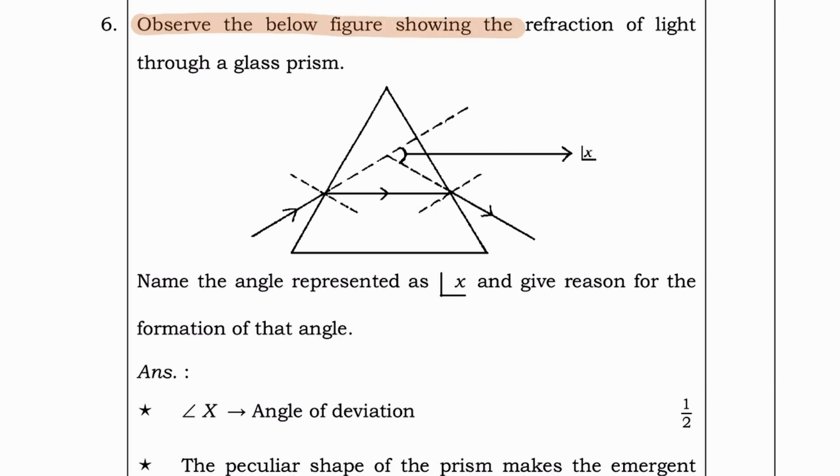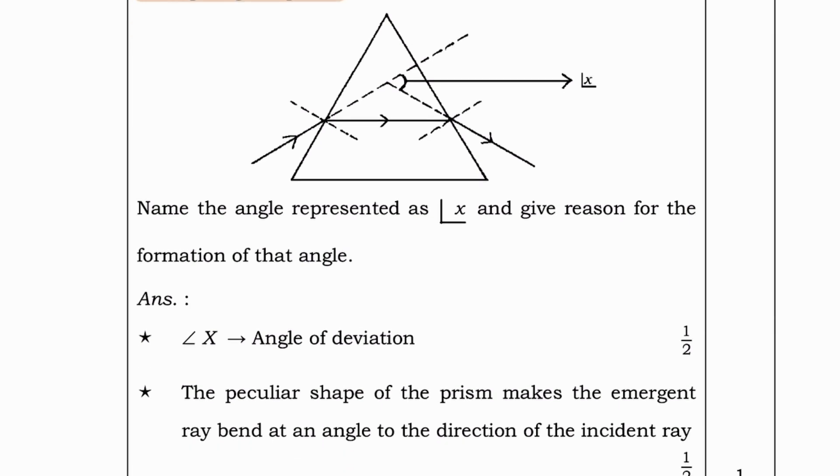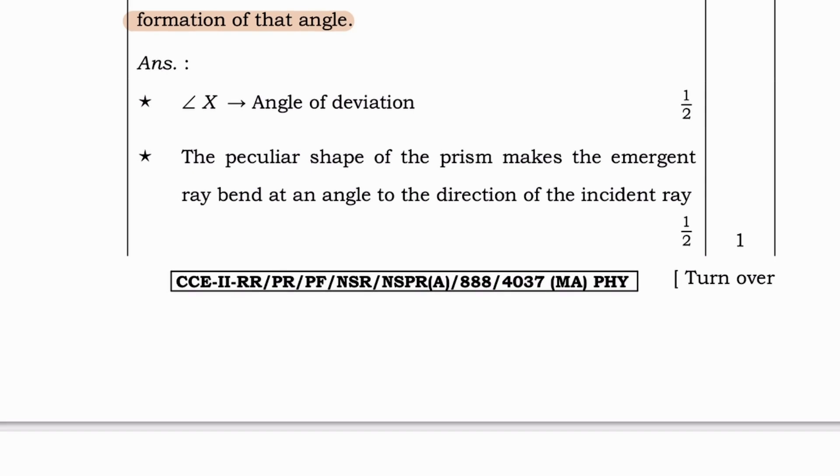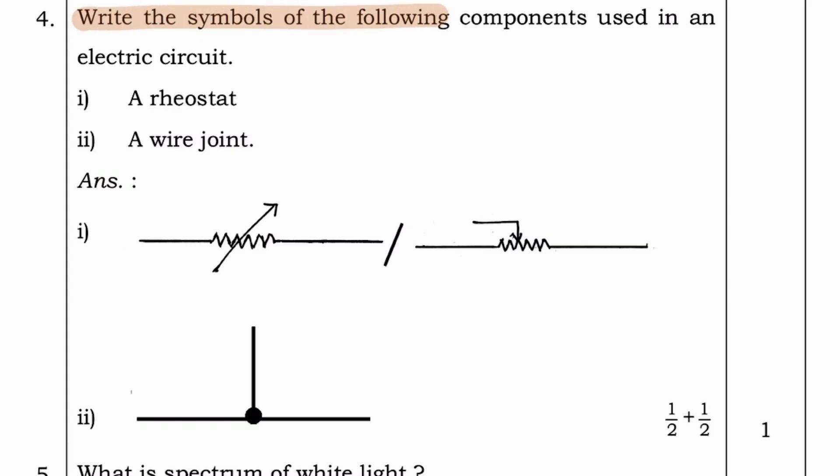Next question. Observe the below figure showing the refraction of light through a glass prism. Name the angle represents as X and give reason for the formation of that angle. Answer is angle of deviation. The peculiar shape of the prism makes the emergent ray bend at an angle to the direction of the incident ray.